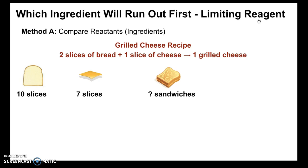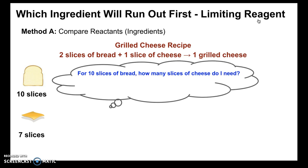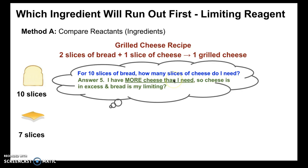Let's tackle the first question — which ingredient runs out first — which is the limiting reagent. There are two methods: Method A and Method B. For Method A, we compare the reactants or ingredients. We ask: for 10 slices of bread, how many slices of cheese do I need? Using the recipe ratio, you would need 5 slices of cheese. You actually have 7 slices, so you have more cheese than you need. That makes cheese the excess reagent, and bread is the limiting reactant — you'll run out of bread first.